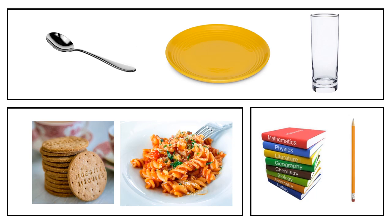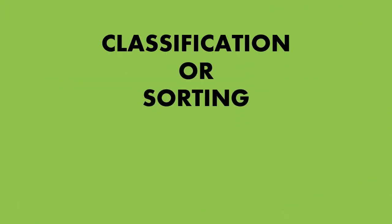You will group the spoon, the plate, and the glass in one category because they all belong to the kitchen. Then you will group the biscuit and pasta together because these two are eatables. And you will group the books and the pencil in another group because both of these are stationery.